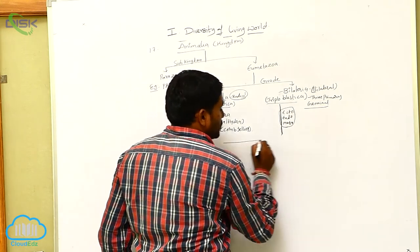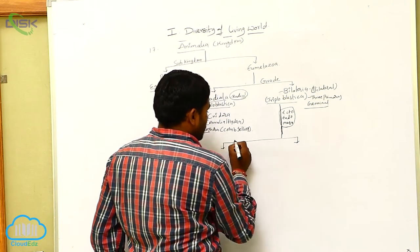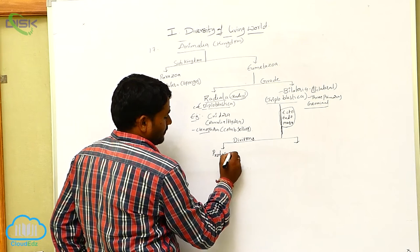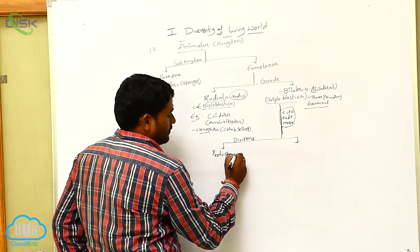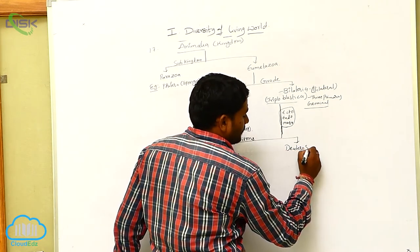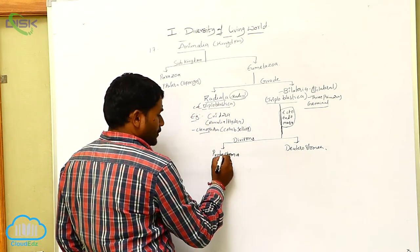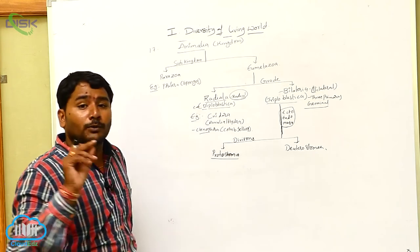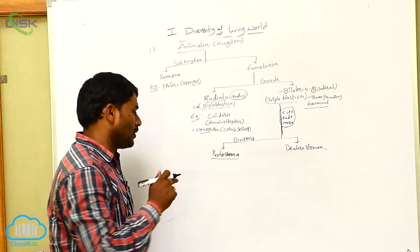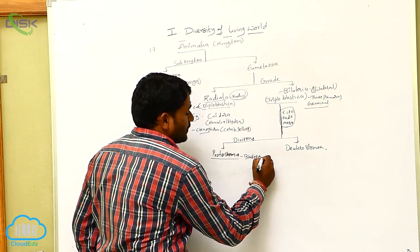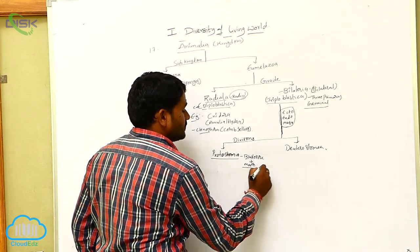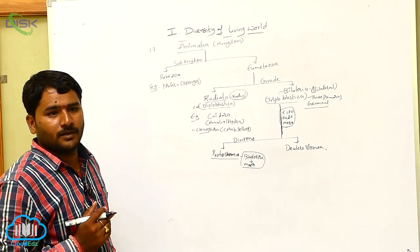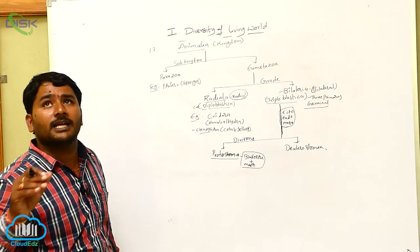Bilateria is divided into two divisions: Protostomia and Deuterostomia. Protostomia means 'proto' = first, 'stoma' = mouth. In protostomians, the blastopore develops into the mouth — the primary opening develops into the mouth and the secondary opening develops into the anus.